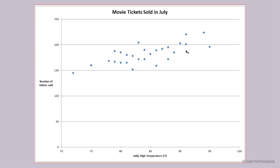If we have the actual data, we can put it into a calculator or spreadsheet to get the equation of the very best summary line. But instead, we're going to take a more informal route where we just approximate on our own what might be a very good average or summary line through these points.